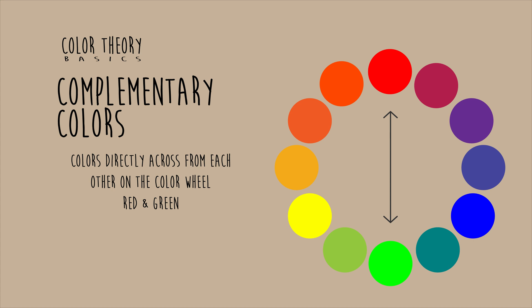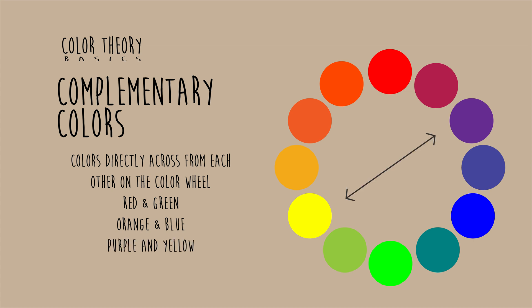There are also complementary color schemes. This is an example of red and green as a complementary pair. Complementary colors are colors that are directly across from each other on the color wheel, like blue and orange, or purple and yellow. These are just some basic examples of complementary colors.